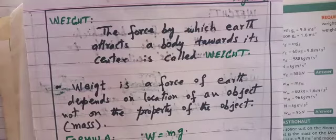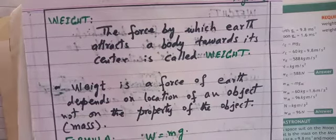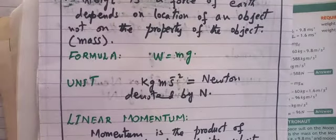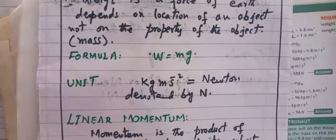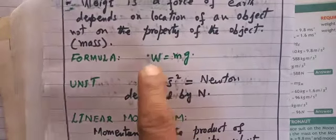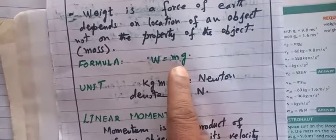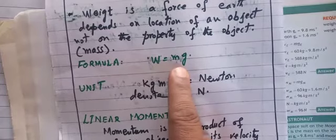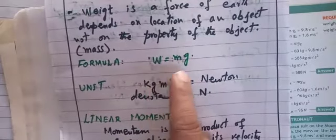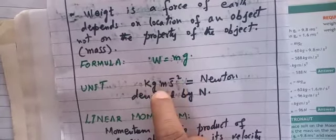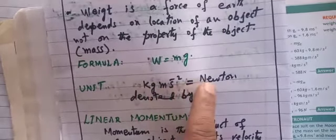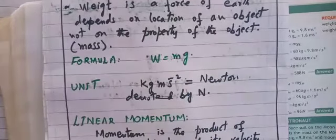Weight depends on the location of the body; it does not depend on the property or mass of the body. According to Newton's second law of motion, the formula is F = ma. Here, since force is weight, we replace F with W: W = mg, where g is the acceleration due to gravity — the attraction of the earth. The unit of weight: m is in kilograms and g is in m/s², so the product gives kg·m/s², which equals Newton (N).